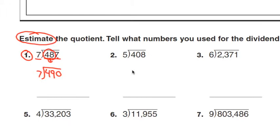Now, what multiple of 7 equals 49? That would be 7, and you add the 0. The estimation here is 70.